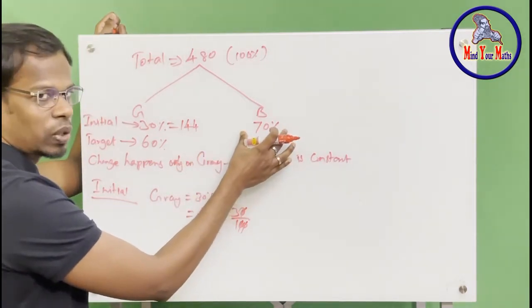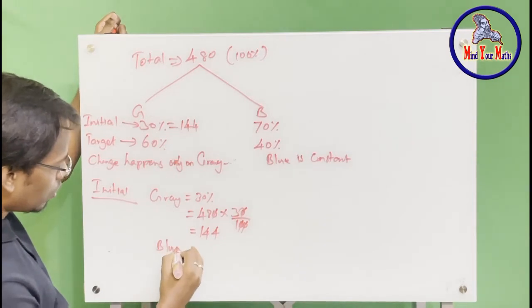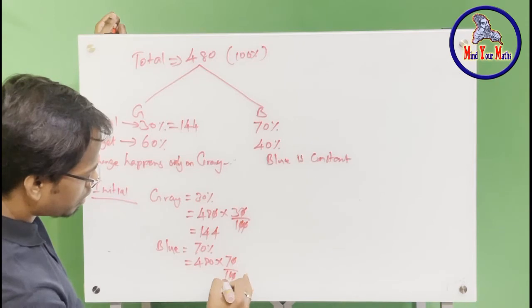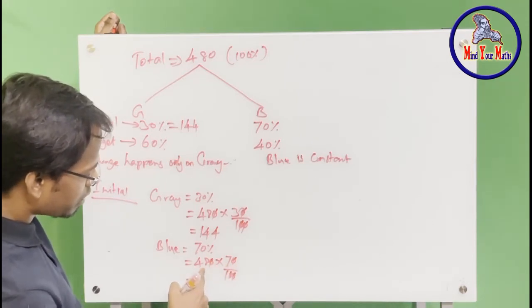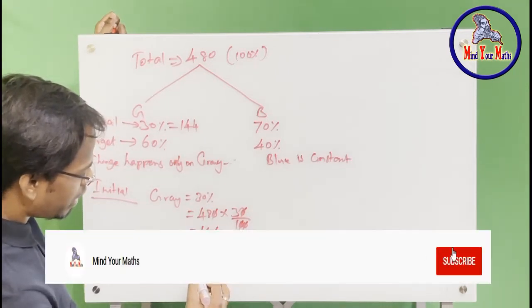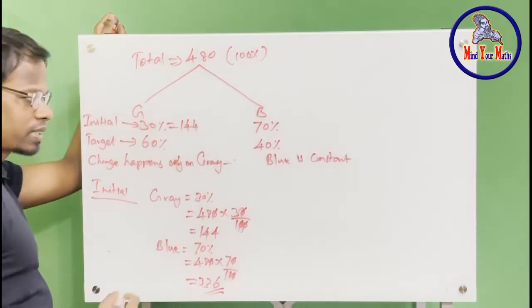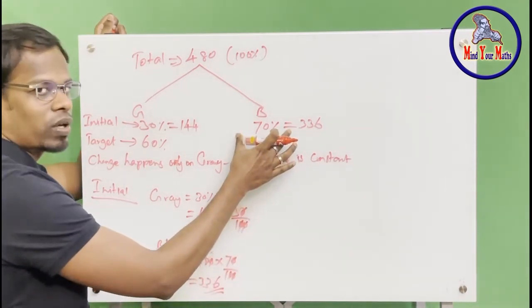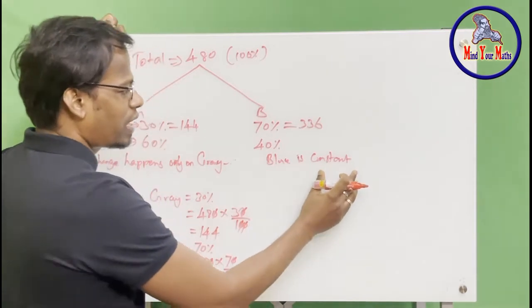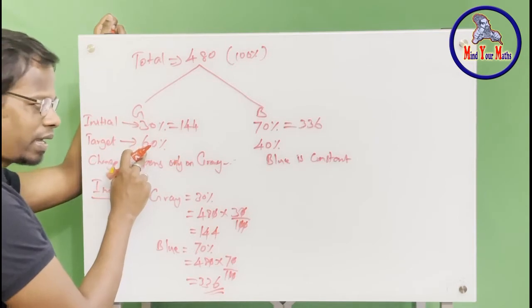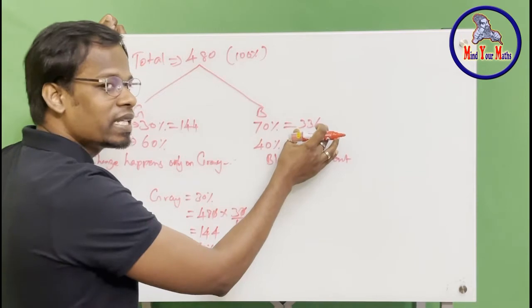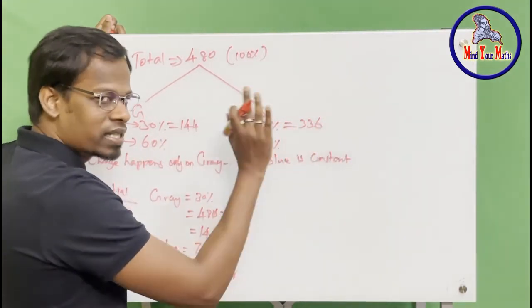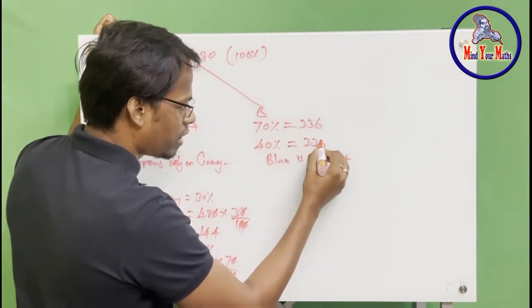Now let's find the blue. 70% is blue. So 70% of 480: 7 times 8 is 56, carry 5. 7 times 4 is 28 plus 5 is 33. So that is 336. This 70% equals 336 blue beads. The blue is constant, so when we hit the target and blue becomes 40%, the number of beads will still be 336.